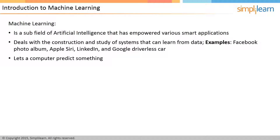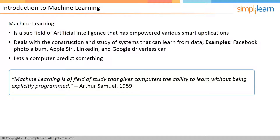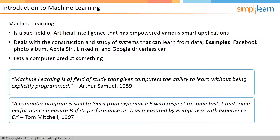It can be seen as building blocks to make computers behave more intelligently. In the words of Arthur Samuel in 1959, machine learning is a field of study that gives computers the ability to learn without being explicitly programmed. Later in 1997, Tom Mitchell gave another definition more useful for engineering purposes: a computer program is said to learn from experience E with respect to some task T and some performance measure P, if its performance on T as measured by P improves with experience E.